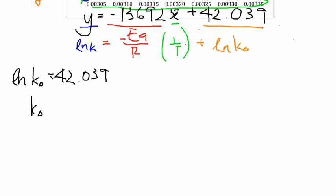we can find our K0 to be 4.92 times 10 to the power of 18. And, this will be the final answer for our K0.